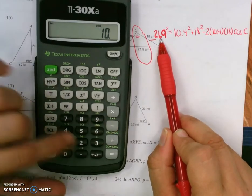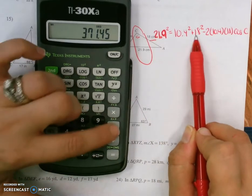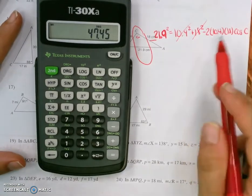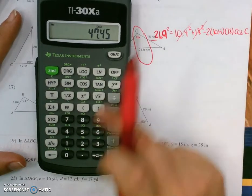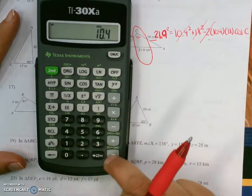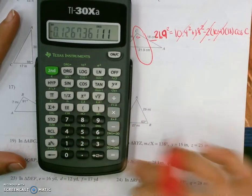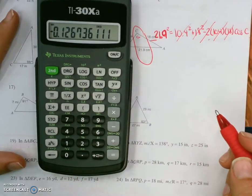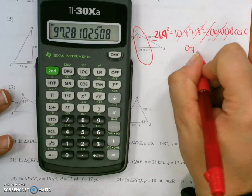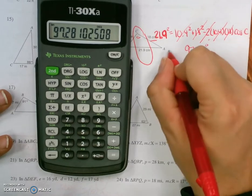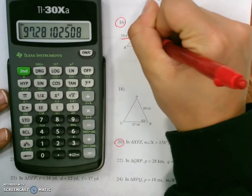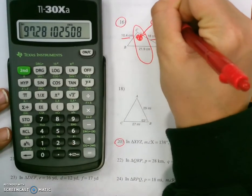So in order to do this, pick up my calculator. 21.9 squared, subtract this out on both sides, minus 10.4 squared minus 18 squared equals. Divided by negative 2, divided by 10.4, divided by 18, second cosine to solve for the missing angle. 97.3 degrees.